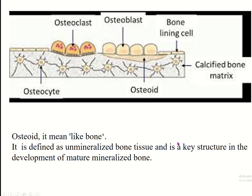Now, osteoid — its name means 'like bone.' It is defined as unmineralized bone tissue secreted by the osteoblasts. Later, this osteoid mineralizes and forms the mature bone.